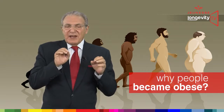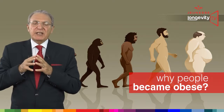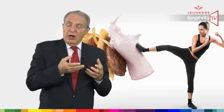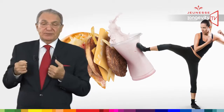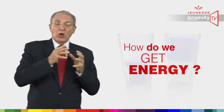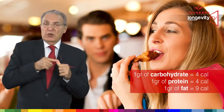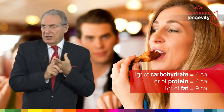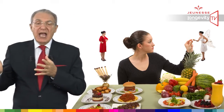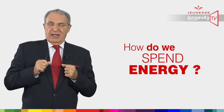Why do people become obese? It is very simple in theory but becomes more complicated when we reach fat metabolism. We gain weight or fat when we eat more than we spend in terms of calories, or when we spend less than we eat. The body gets energy only from food — one gram of carbohydrate releases four calories, the same for protein, but one gram of fat releases nine calories. So it all depends on how much you eat and what kind of food you eat — whether it is rich in fat, protein, or sugars.